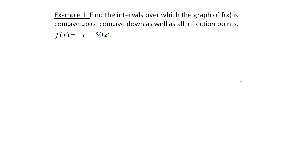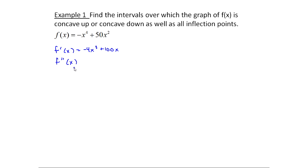This is a function we worked with last time. When we did that, we got f prime of x equal to minus 4x cubed plus 100x. In this example, I'm asking you to find the intervals over which the graph is concave up or concave down, and any inflection points. Inflection points are where we change from concave up to concave down or vice versa. So what I need to do is find the second derivative, f double prime, which means take the derivative of the derivative. So f double prime would be minus 12x squared plus 100.